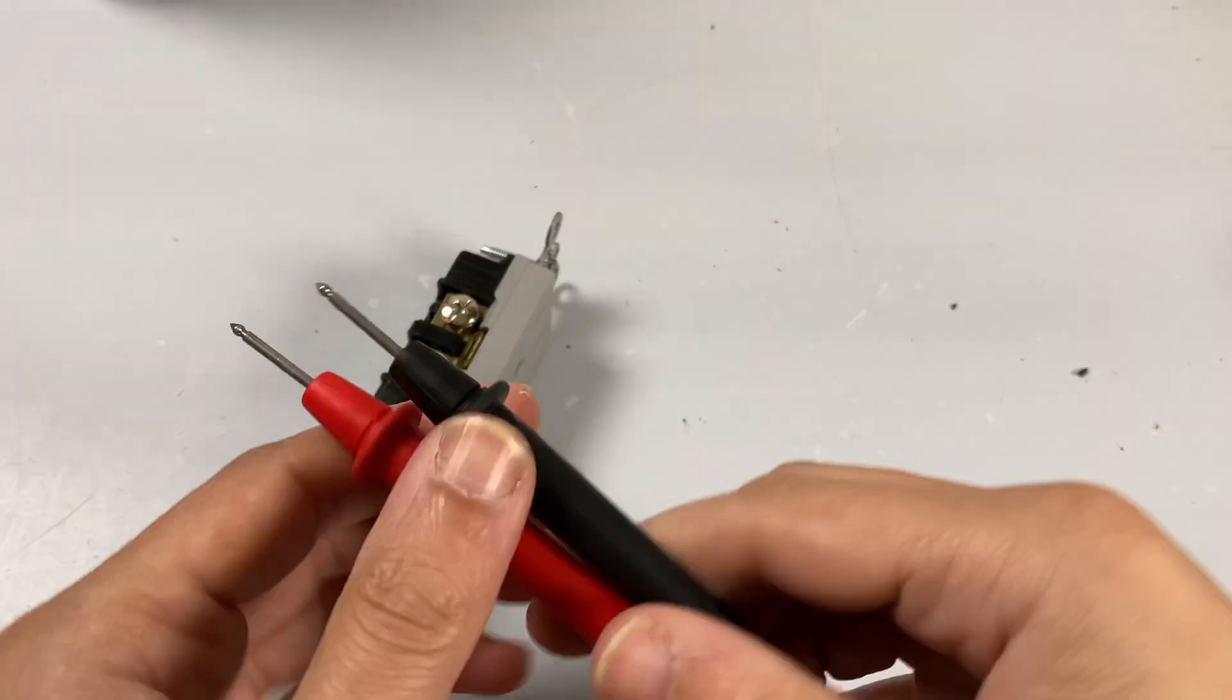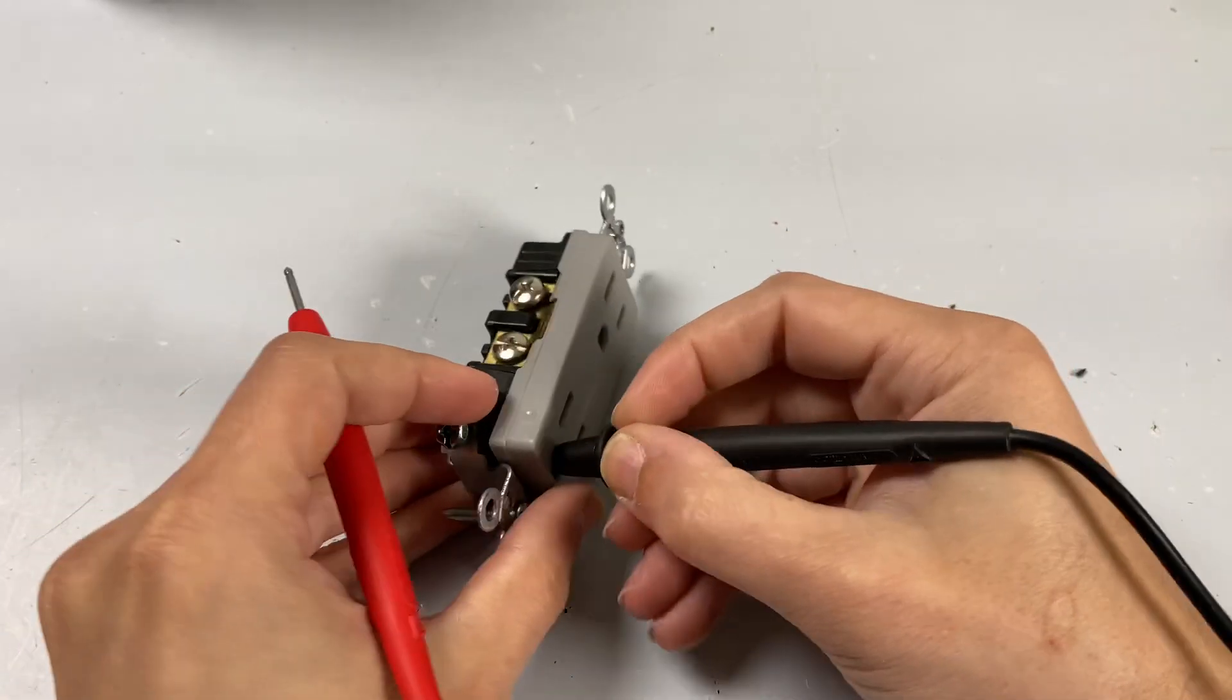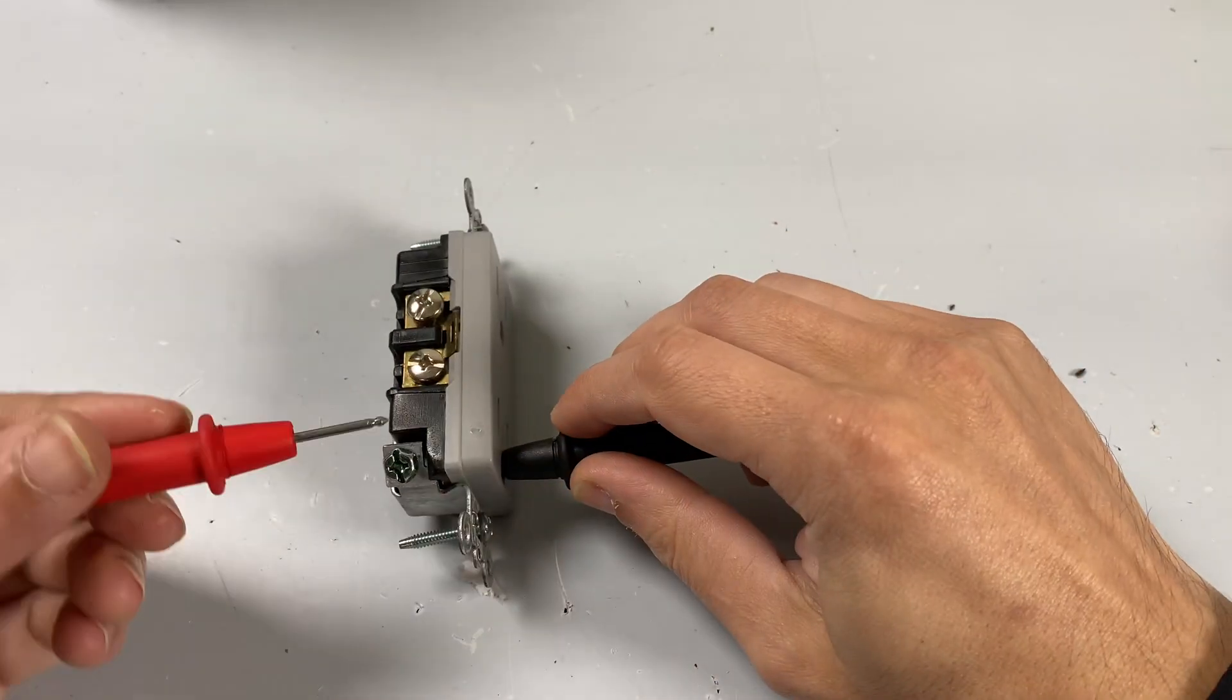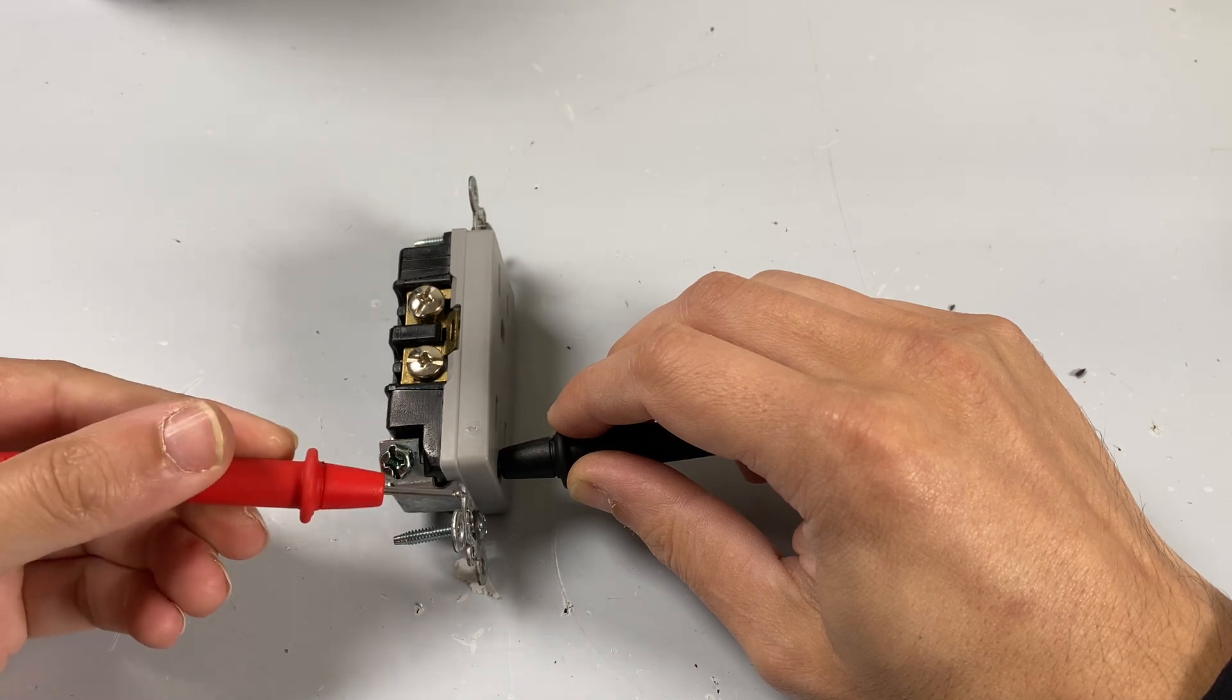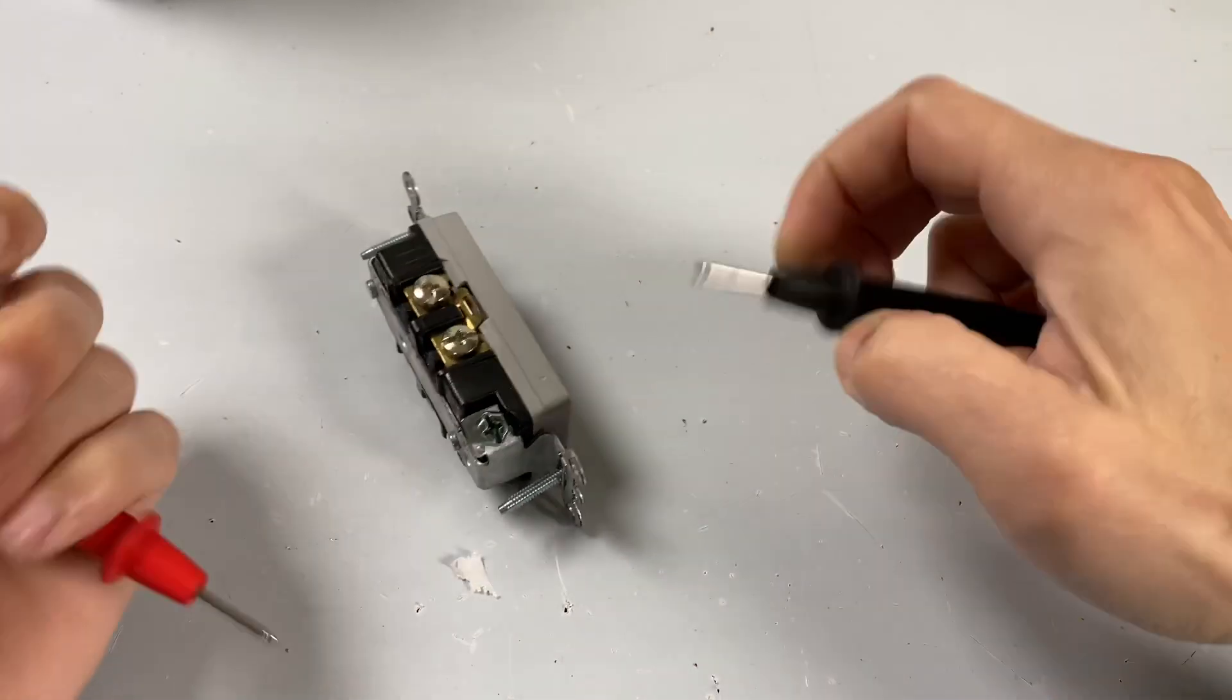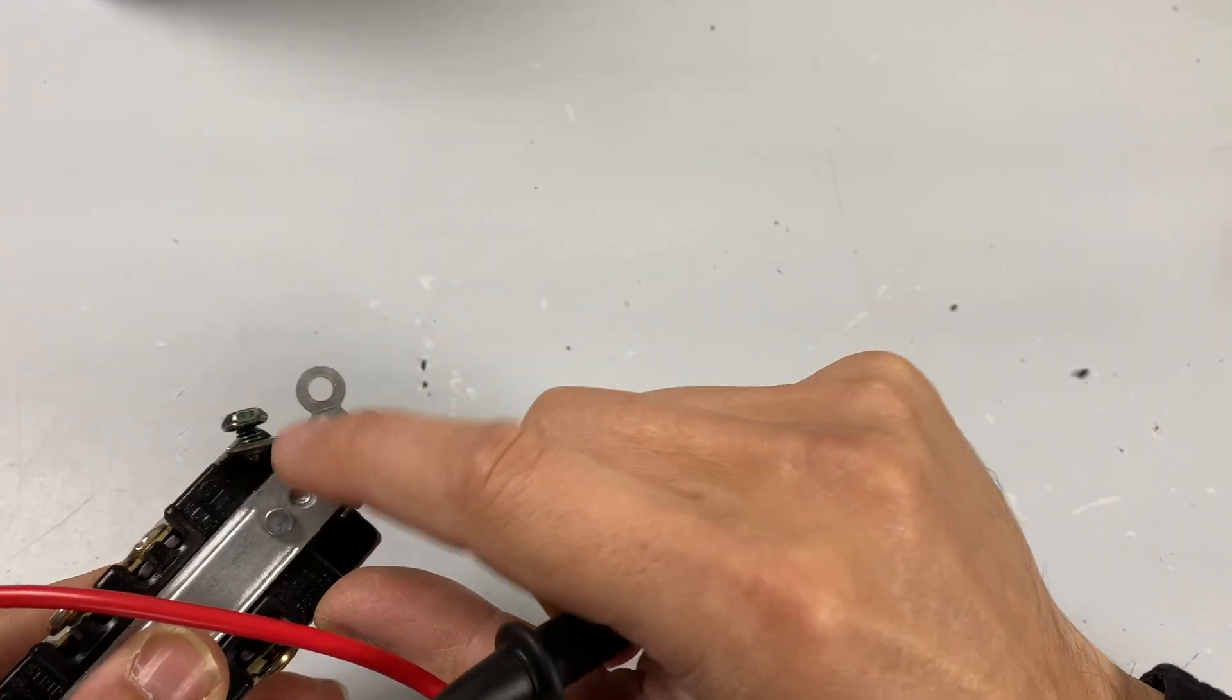I'm going to grab my multimeter here, and this is just set on continuity. If we touch our ground pin in our outlet like this and we touch the screw, we get continuity. And then if we also touch the chassis, we get continuity because this screw is just tapped into the chassis.